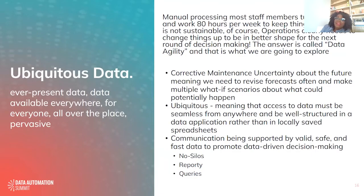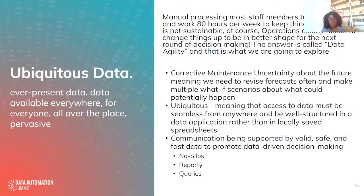If you need to make fast and frequent decisions, data agility becomes extremely critical — the center of our environment. That ubiquitous data was ever-present, available anywhere, available to all, and pervasive throughout the organization. We took the manual process and moved away from it. Most of our staff were turning to Excel, working 80-plus hours a week to keep things afloat — and we were losing data. Operational clarity was needed to change things, and data agility was the answer.